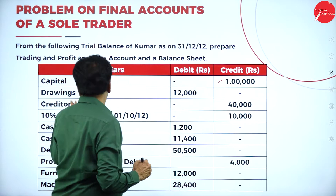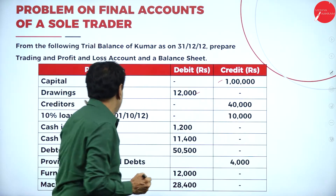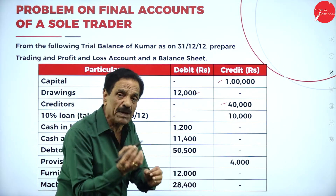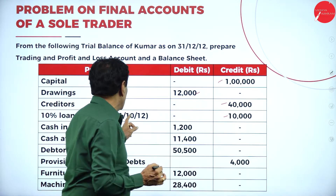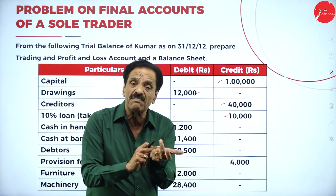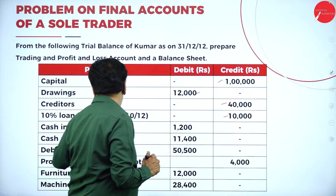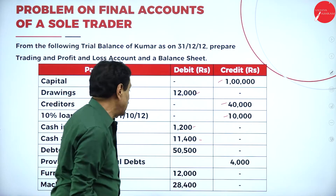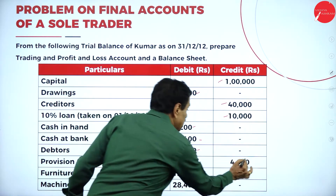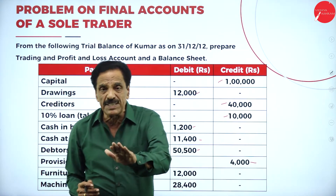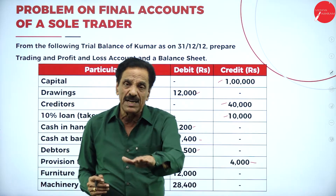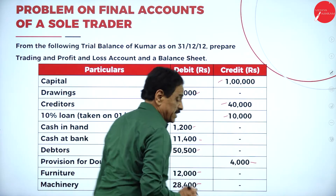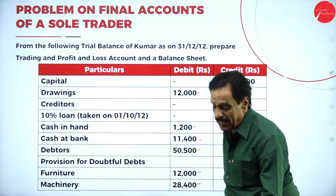Capital is a liability. Drawings — he has drawn money, so it comes on the debit side. Creditor is a liability item which we have to pay. Then a 10% loan taken — we have taken the loan of 10,000. The year ends on 31st December. We took the loan on 1st October, so there are three months' interest to pay at 10%. Cash in hand is an asset. Cash in bank is an asset. Debtor is an asset. Provision for bad debts — this is the old RBD. The formula is: bad debt plus new RBD minus old RBD. Furniture is an asset. Machinery is an asset.